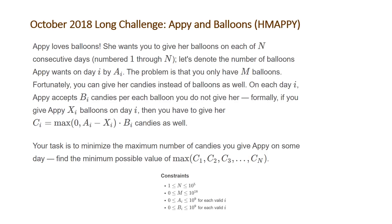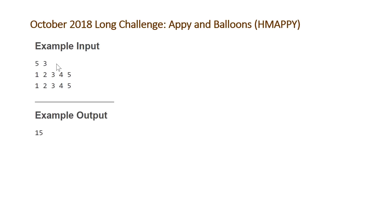Let's take a look at the example CodeChef provided to understand this problem better. We have two numbers at the top: n equals 5 (the number of days) and m equals 3 (the number of balloons we start with). The next two lines represent arrays A and B — A gives the number of balloons Appy wants each day, and B gives the number of candies you must pay per balloon you don't give her.